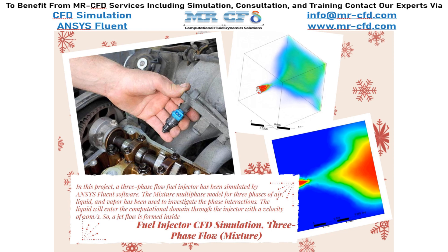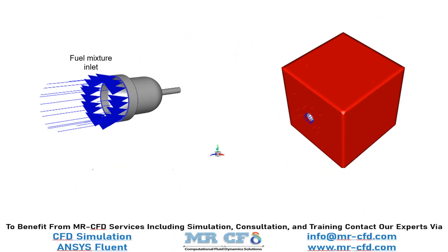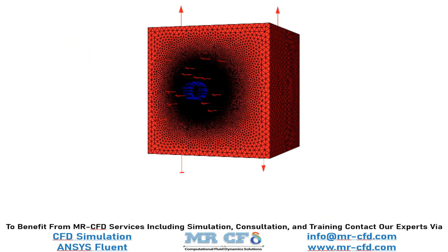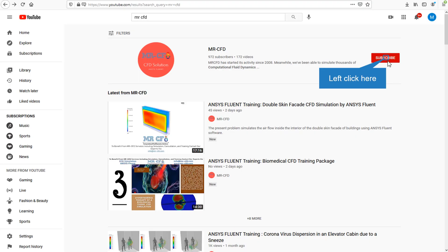In this project we will simulate a three-phase flow fuel injector. The geometry of the present project is designed in Gambit software. The present geometry is meshed in Gambit software, and the mesh type used for this geometry is unstructured.